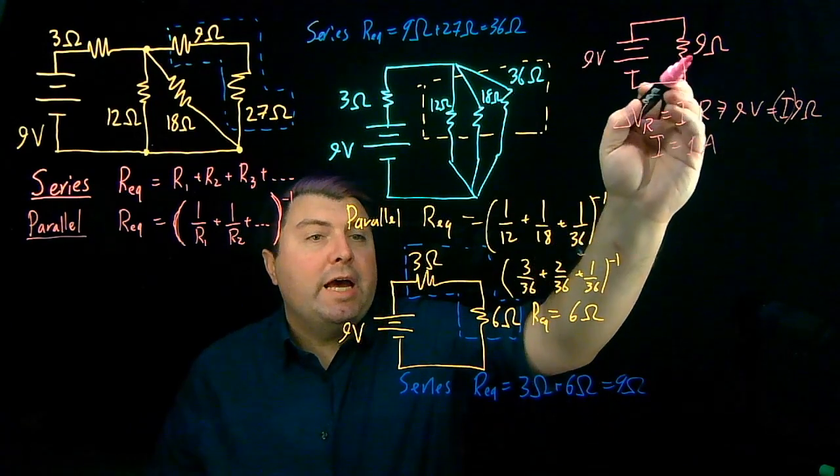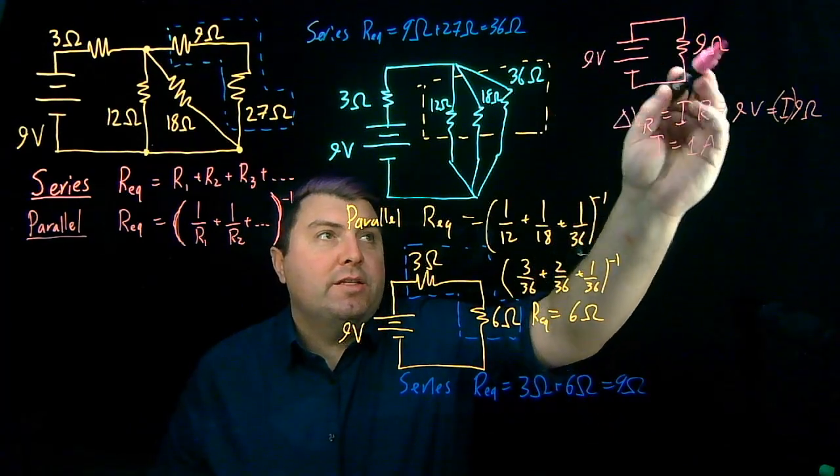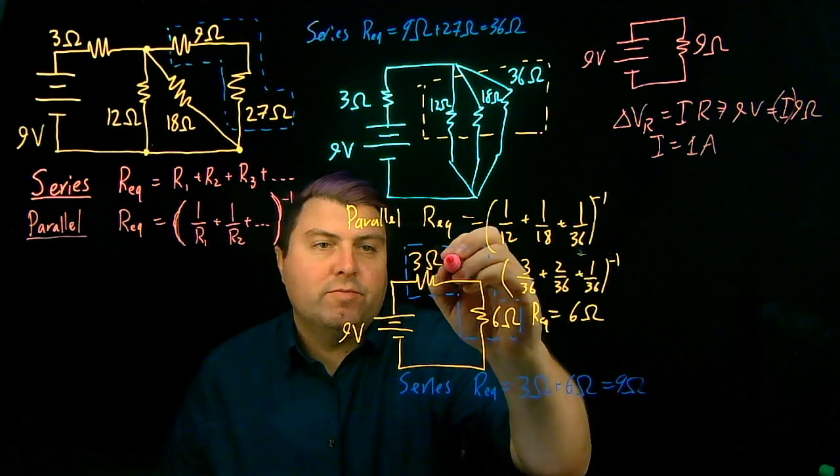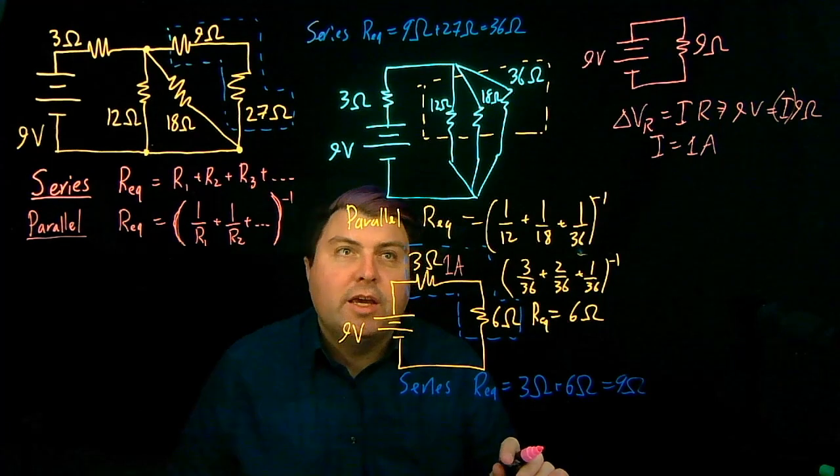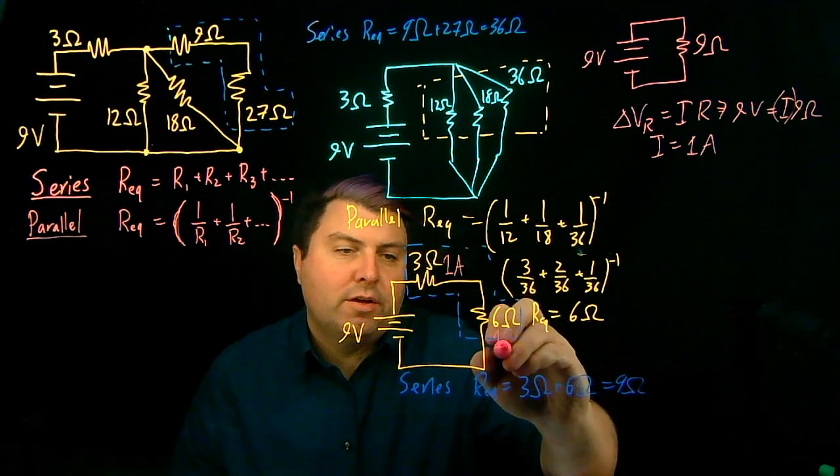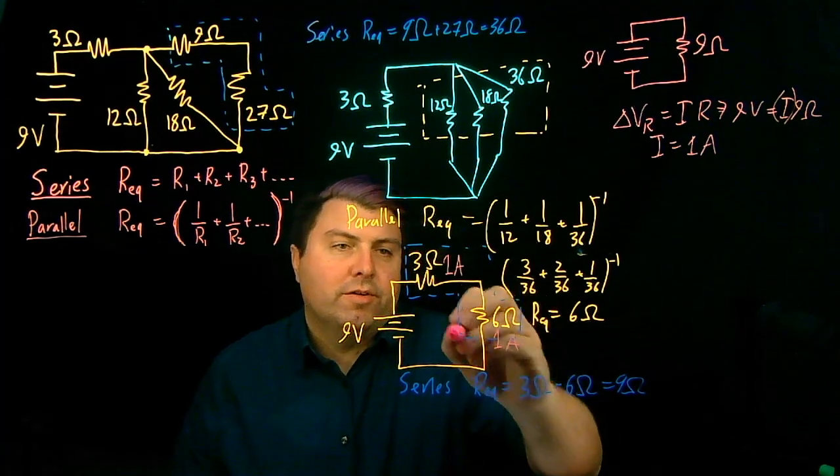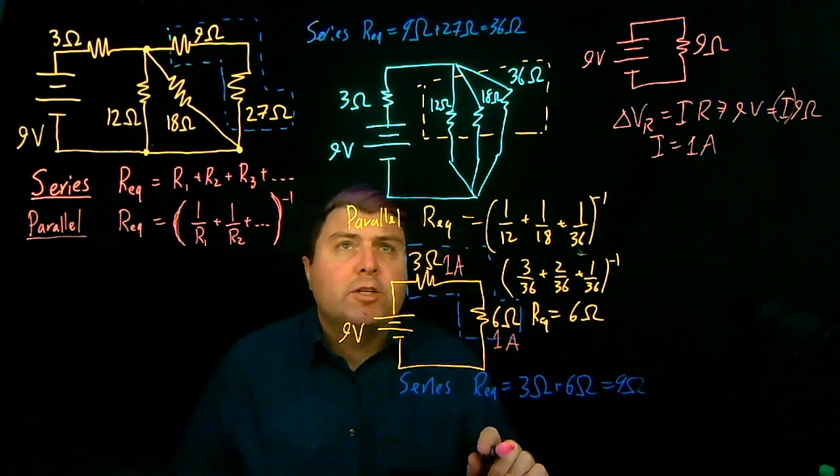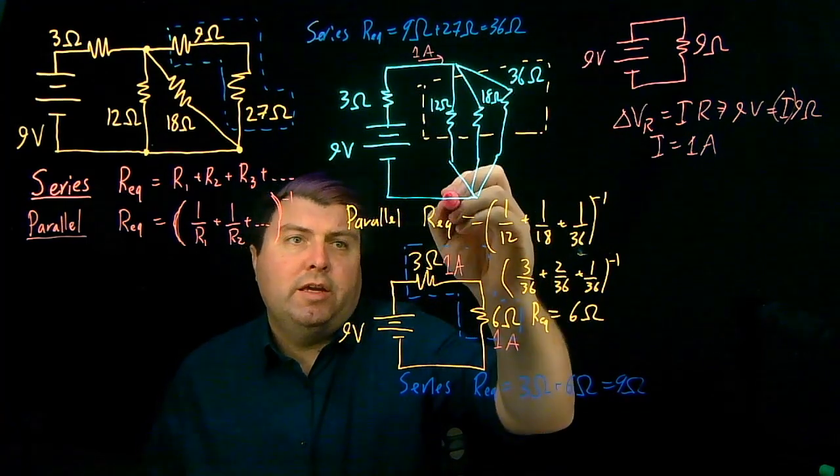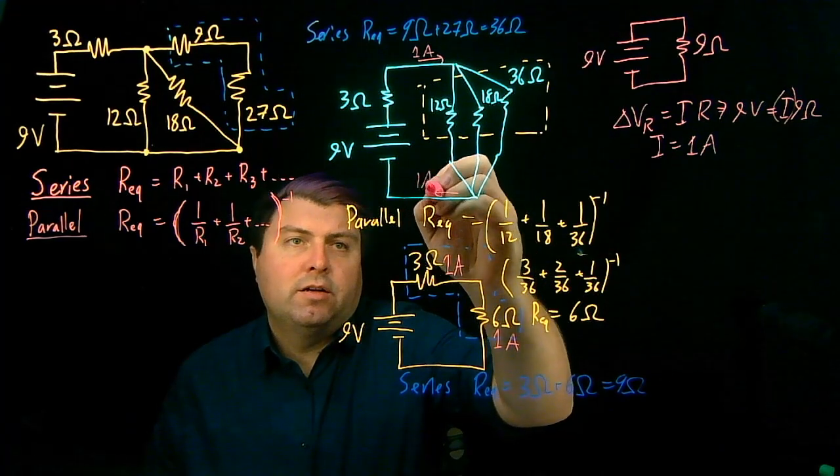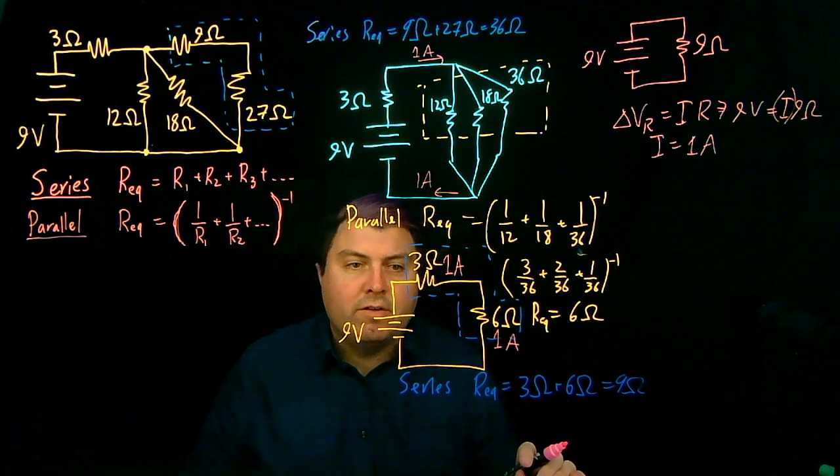Well, as we build back this, this 9 ohms and this 3 ohms, that means that this resistor is 1 amp. And it means that we have 1 amp that goes over this 6 ohm, which means that we have 1 amp going into here and 1 amp coming out of here.